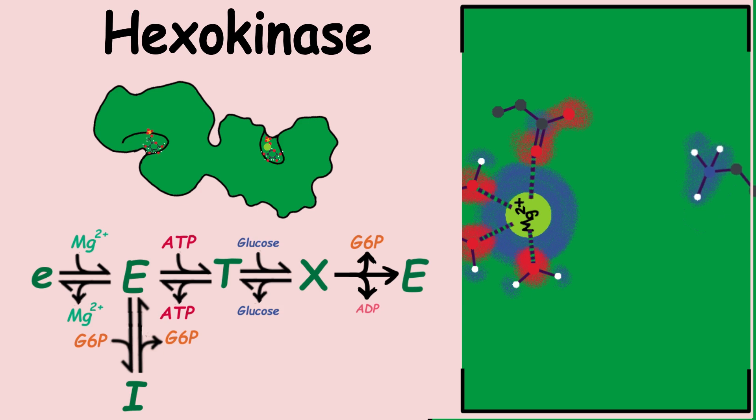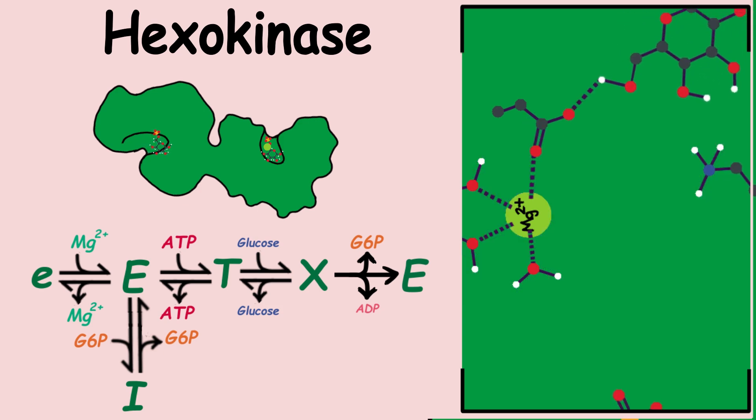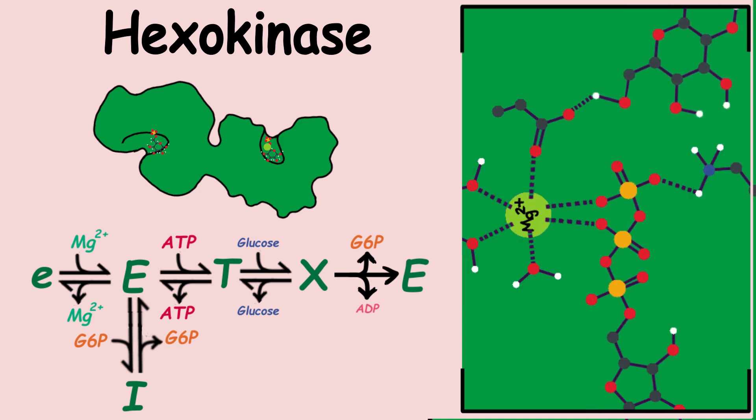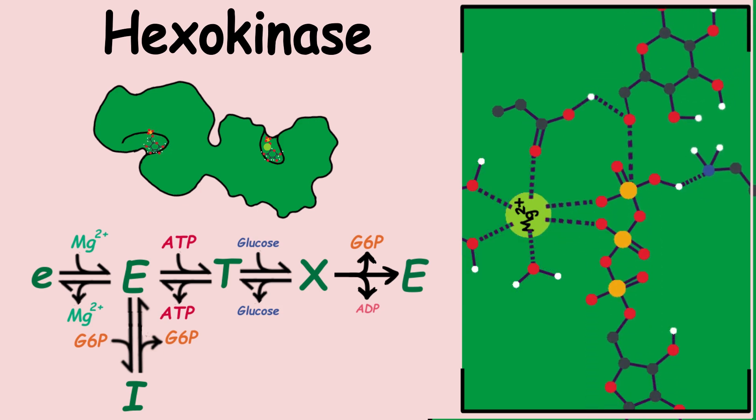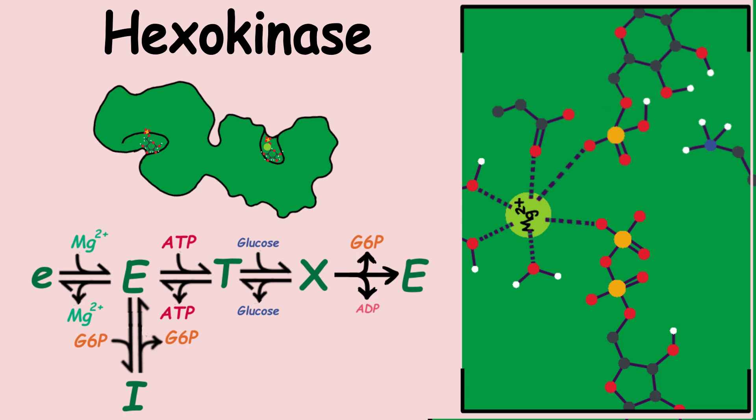Hexokinase is competitively inhibited by its own product, glucose-6-phosphate, thus self-regulating its energy expenditure.